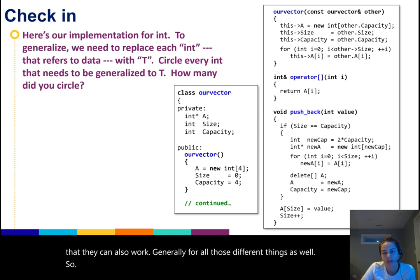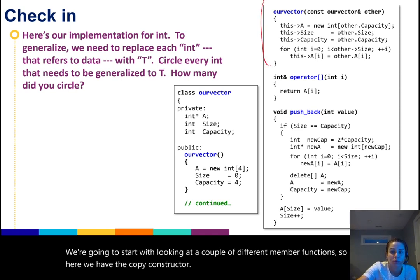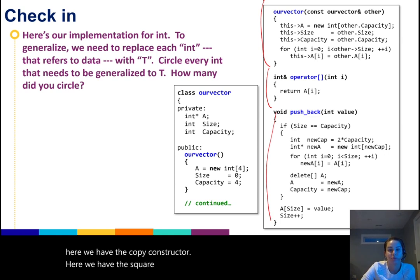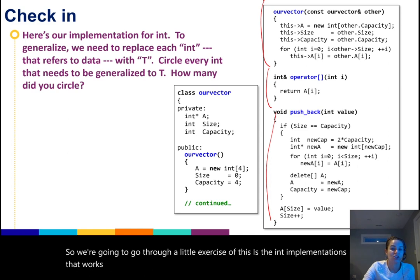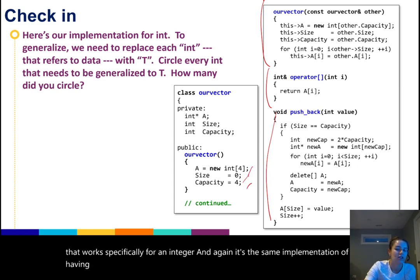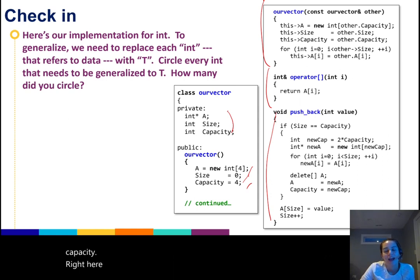So we're going to start with looking at a couple of the different member functions. Here we have the copy constructor, we have the square bracket operator, and we have the pushback function. We're going to go through a little exercise. This is the int implementation, so it works specifically for an integer, and it's the same implementation of having a C array and then two member variables keeping track of size and capacity. And this is all implemented as an ourvector of ints.